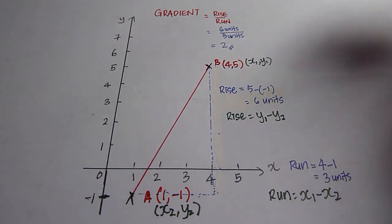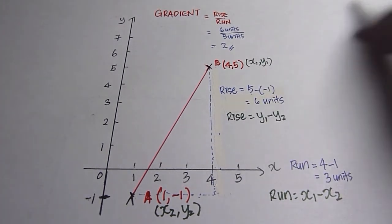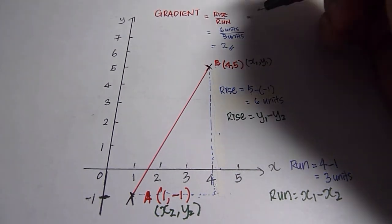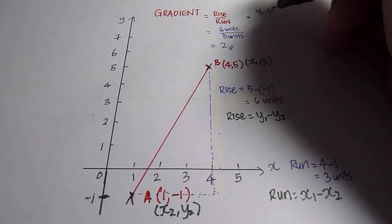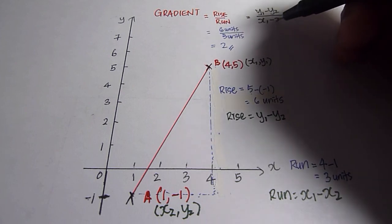So, putting it back to this formula, gradient, we can say it's y1 minus y2 over x1 minus x2.